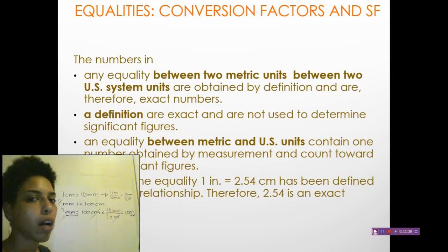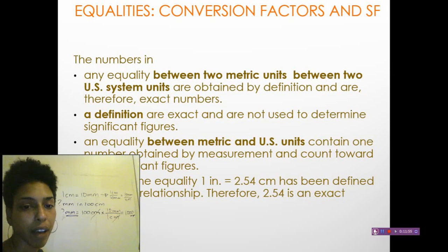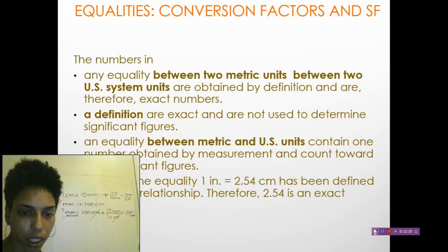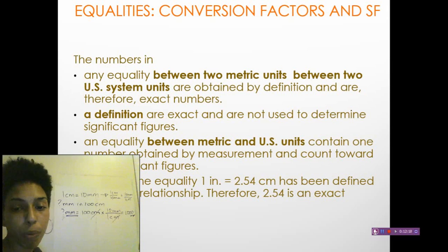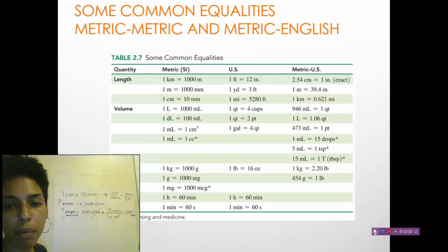There's one important thing to remember about conversion factors and significant figures. Conversion factors between metric units are definitions — they are exact, so you don't count them when determining how many sig figs you have in your calculation. However, when going from metric to English units, those are measurements, and you must consider the number of significant figures in those measurements.